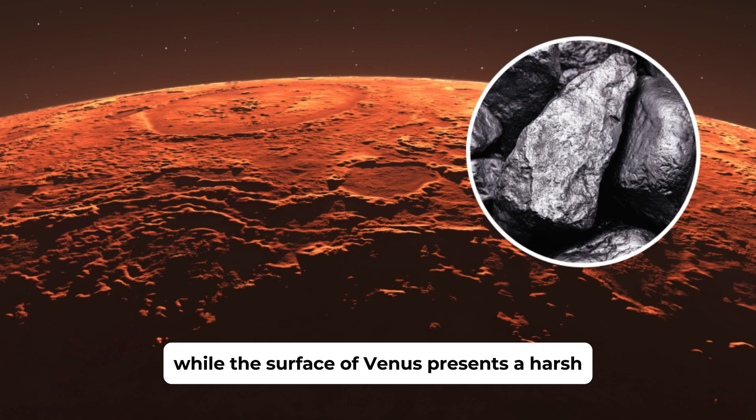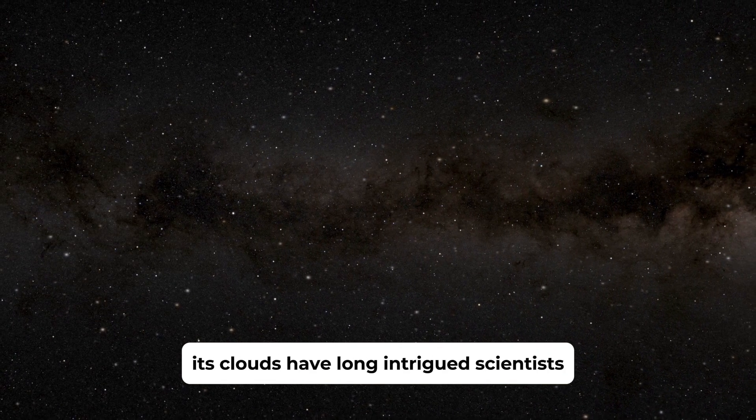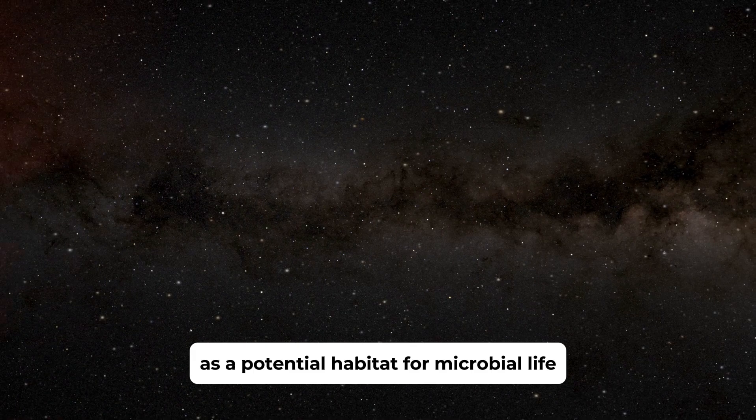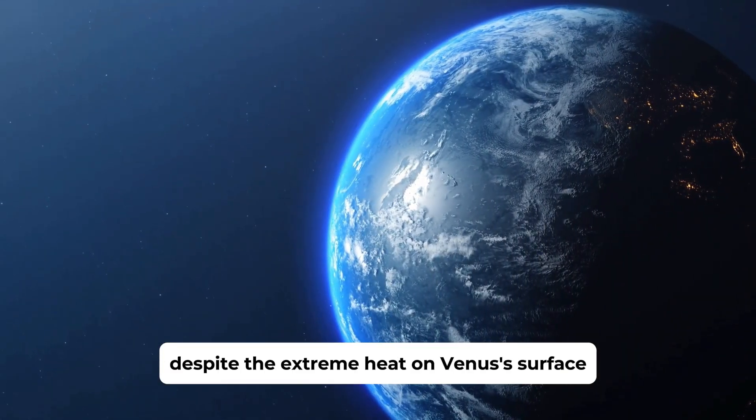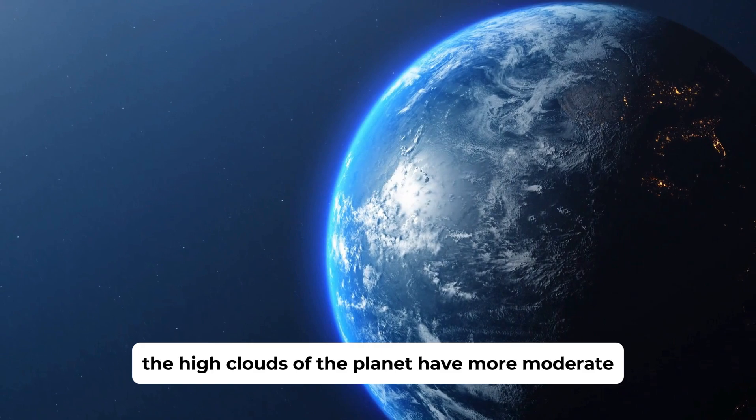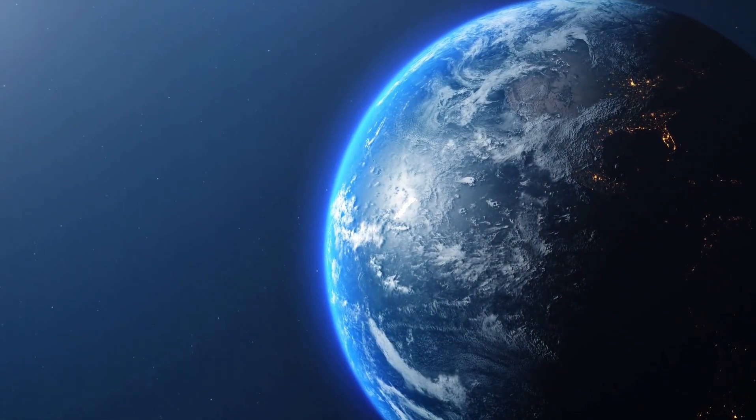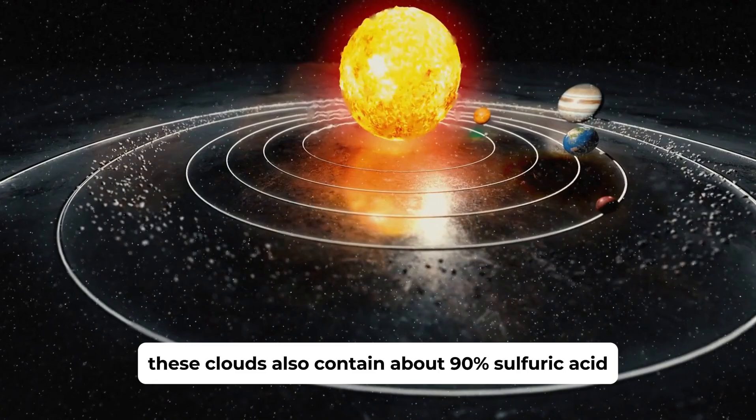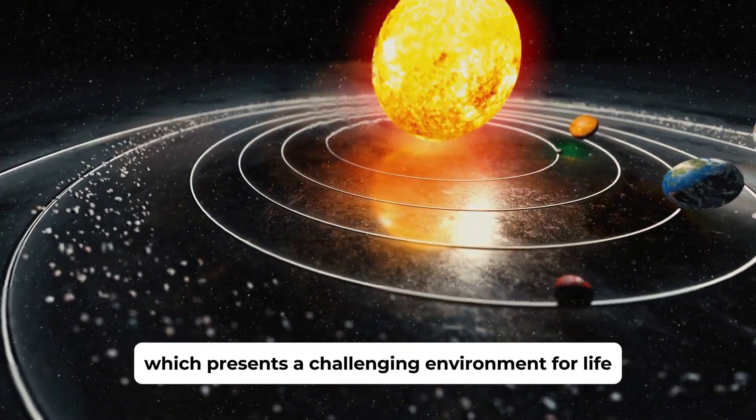While the surface of Venus presents a harsh and inhospitable environment, its clouds have long intrigued scientists as a potential habitat for microbial life. Despite the extreme heat on Venus's surface, the high clouds of the planet have more moderate temperatures, around 30 degrees Celsius. However, these clouds also contain about 90% sulfuric acid, which presents a challenging environment for life.